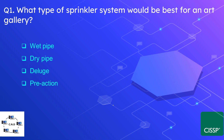Question number one: what type of sprinkler system would be best for an art gallery? The options are wet pipe, dry pipe, deluge, or pre-action. The correct option is pre-action. The pre-action sprinkler system lowers the chance of accidental discharge by requiring two separate triggers — the sprinkler head must open and the fire alarm must trigger.